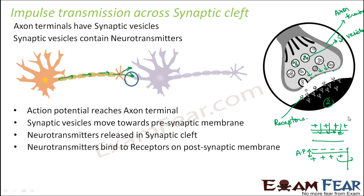So the synaptic cleft is basically crossed with the help of chemicals called neurotransmitters, which are present inside the synaptic vesicles. These synaptic vesicles are sac-like structures that store chemicals and are very important for propagating nerve impulses between neurons. These neurotransmitters are constantly secreted by the cell because they are needed all the time. This is how impulse transmission takes place between various neurons.